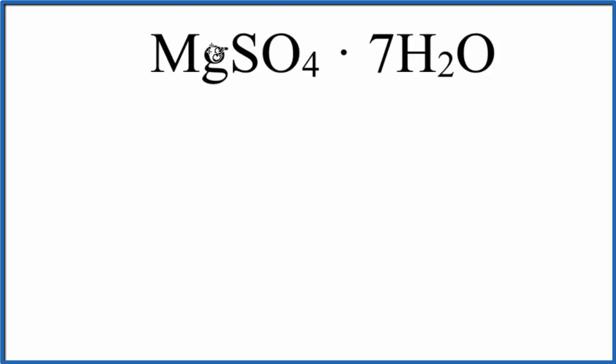So we have magnesium sulfate, this ionic compound. Seven water molecules are around it. So first, let's find the number of atoms in this magnesium sulfate, then we'll do the seven water molecules.